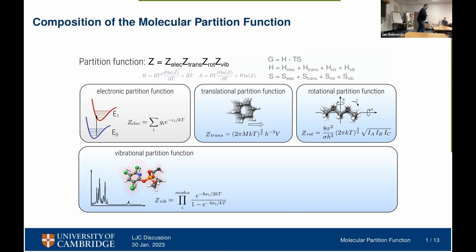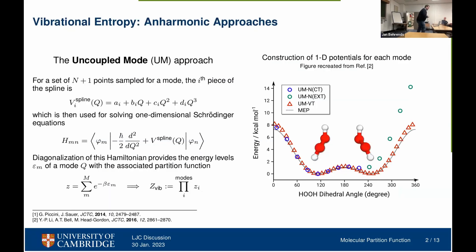For flexible molecules this can be quite challenging, and there are some approaches that efficiently deal with it. One is the uncoupled mode approach pioneered by Joachim Sauer, and further developed by Martinez, Gordon, and Berkeley. What's done here is that for each vibrational mode you model a one-dimensional potential energy surface, fit a spline function to it, and solve the one-dimensional Schrödinger equation to get the energy levels associated with the mode. These approaches work really nicely. However, from a technical point of view, they require some handiwork in setting up the splines and deciding which of the 3N-6 modes to model this way.